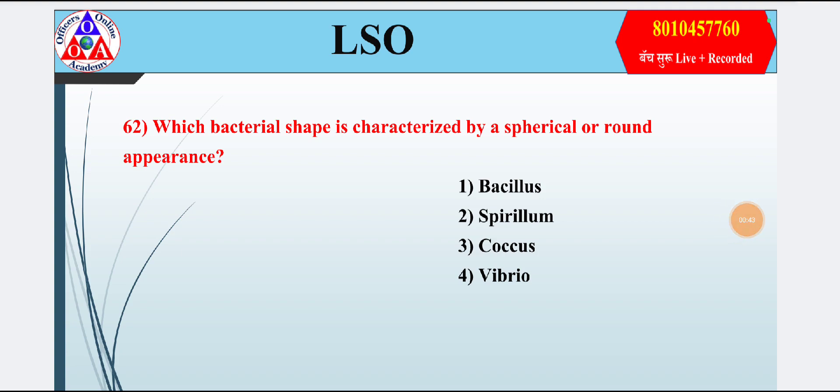Question 2: Which bacterial shape is characterized by a spherical or round appearance? Option 1: bacillus; option 2: spirillum; option 3: coccus; option 4: vibrio. Answer is option 3 — coccus.